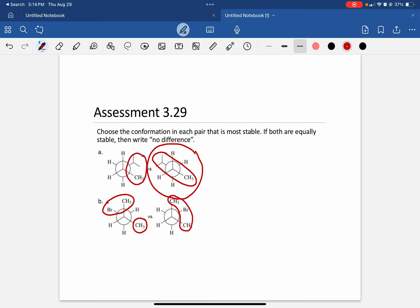However, the first one is going to be the more stable conformation. And the reason why is because you only have two of those groups right up against one another instead of it being three.